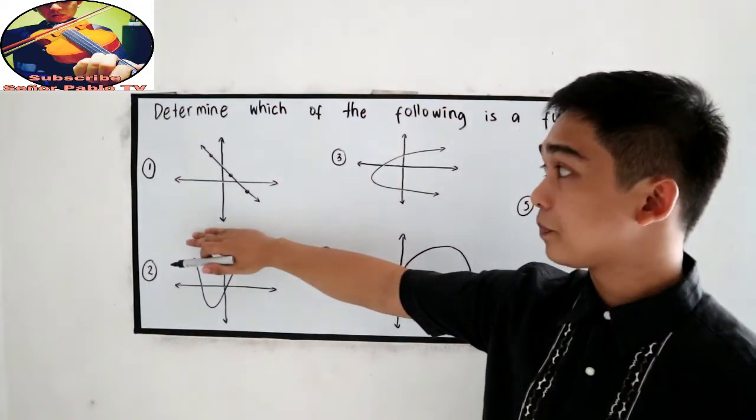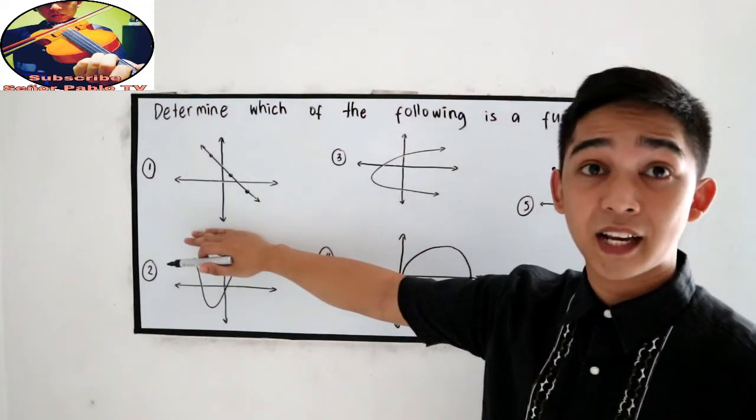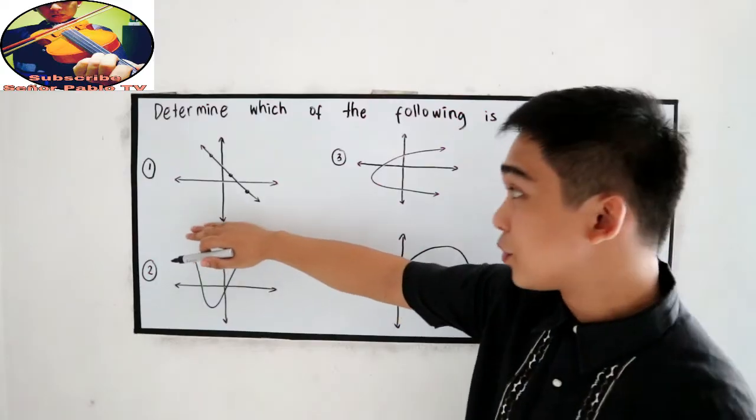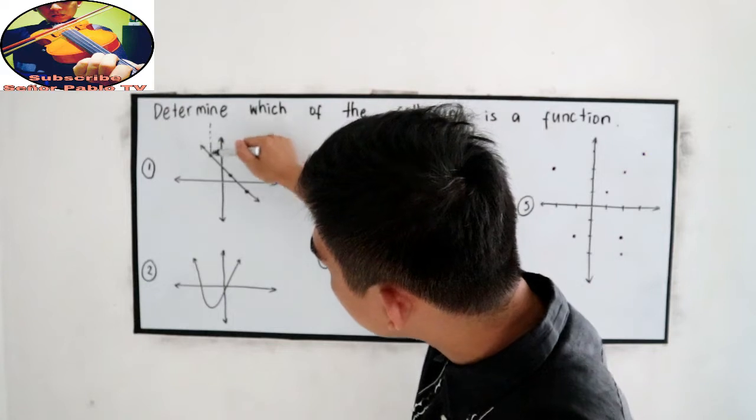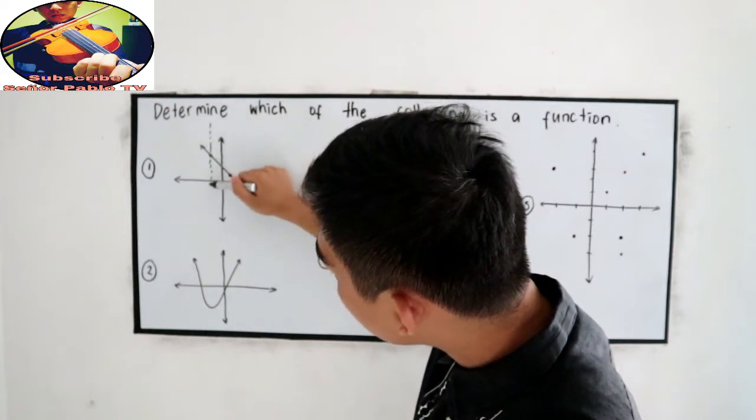Let's try number one. We're going to draw a vertical line. Use the vertical line test. So we have a point here, it only touches once, the other point touches once,